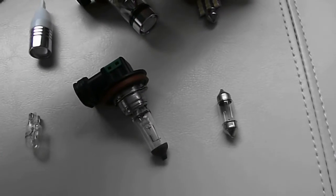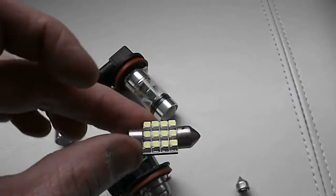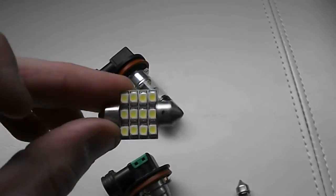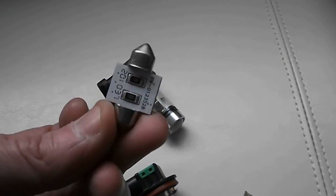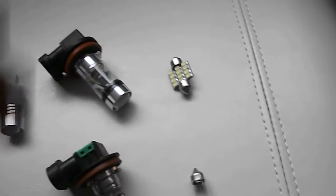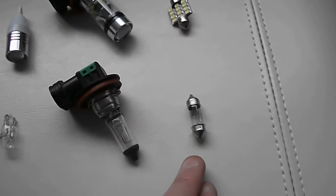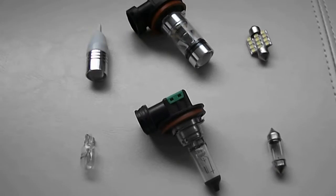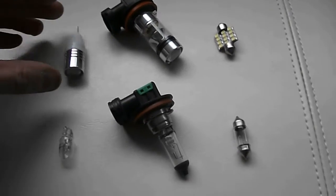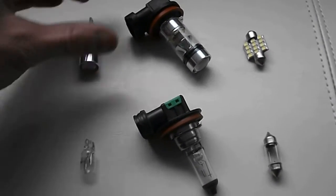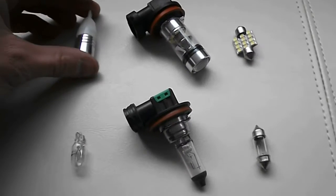And lastly, we have the dome light. This would be the replacement for the dome light and the trunk light. So 12 SMDs, festoon bulb, 30 millimeter size. Compared to the old stuff here, it's got to be better than that. But how much better and is it worth the money spent on these guys? That's what we're going to find out.